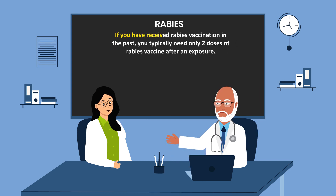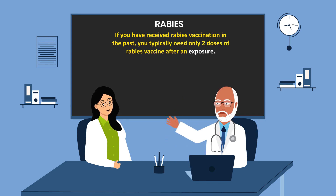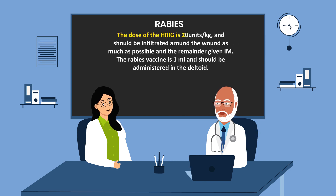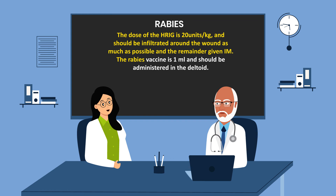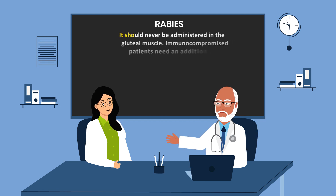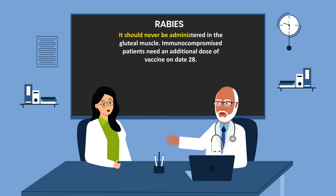If you have received rabies vaccination in the past, you typically need only two doses of rabies vaccine after an exposure. The dose of human rabies immunoglobulin is 20 units per kg, should be infiltrated around the wound as much as possible, and the remainder given intramuscularly. The rabies vaccine is 1 ml and should be administered in the deltoid — it should never be administered in the gluteal muscles.